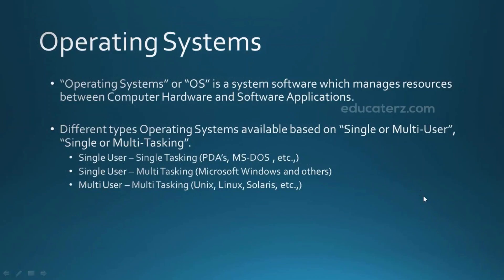Based on this, there are three different operating systems. The first is single-user and single-tasking, which allows only one user and one task at any time — MS-DOS falls into this category. Next is single-user and multitasking, which allows one user but multiple operations — the Microsoft Windows family, like Windows XP, 7, and 8, falls here. The most powerful is multi-user and multitasking, where UNIX, Solaris, Linux, CentOS, and Ubuntu all belong. Here, any number of users can perform any number of applications at any time.